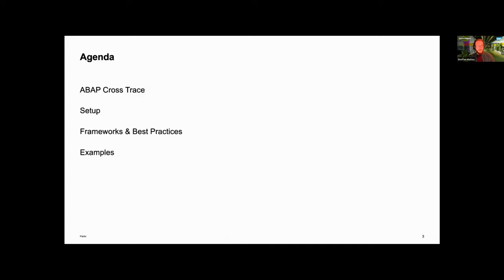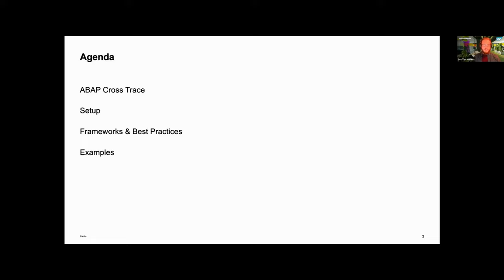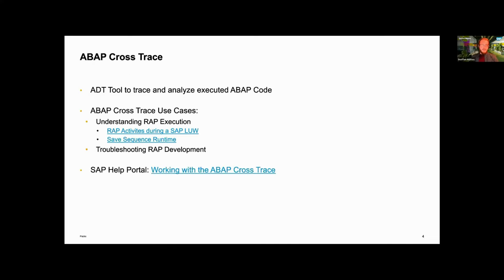Let's talk about today's agenda. First, we want to cover the general idea behind ABAP Cross Trace — the history and motivation behind it. After this brief introduction, we'll jump into the system where Dominic will show how to set up ADT and configure the ABAP Cross Trace tool. After that, we'll look at the different frameworks that contributed to ABAP Cross Trace and how to work with them in a best practices manner. Finally, we'll troubleshoot two small examples using the tool.